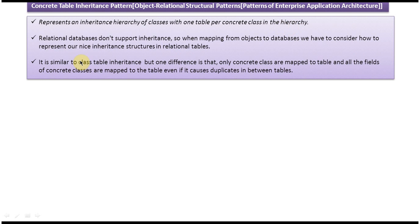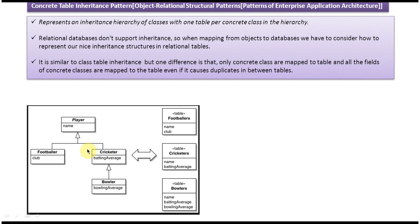Let's look at an example. On the left side we have a Player, which is a superclass with a name attribute. Footballer and Cricketer are subclasses that inherit from Player. Footballer has a club attribute, and Cricketer has a batting average attribute.